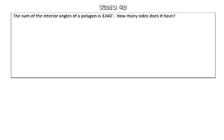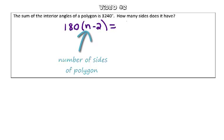What we learned was that to find the sum of the interior angles of any polygon, we can take 180 and multiply by the number of sides minus 2, and that will give us the entire sum of the interior angles of a polygon.